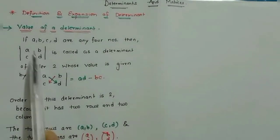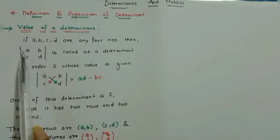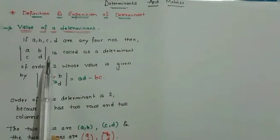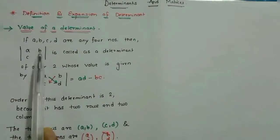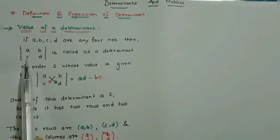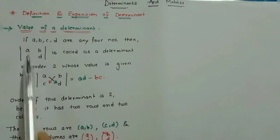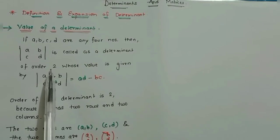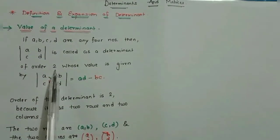The order of this determinant is two. The horizontal lines represent rows: a, b is the first row and c, d is the second row. The vertical lines represent columns: a, c are elements of the first column and b, d are elements of the second column. So we have two rows and two columns, and the order is row × column — which is 2×2, so the order is two.